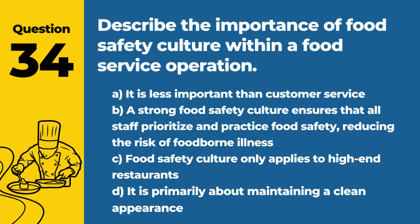Question 65. Explain the term secondary contamination and how it can occur in food service. Answer: B. Occurs when already contaminated food contaminates another food or surface. Secondary contamination highlights the importance of preventing the spread of contaminants from one source to another within the kitchen.